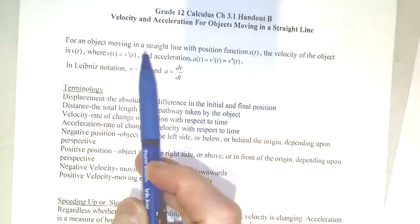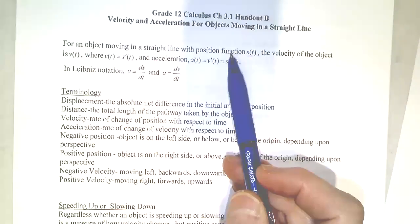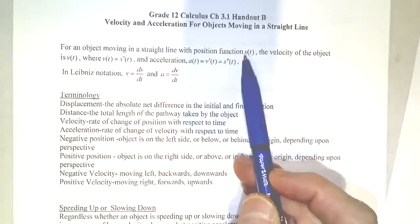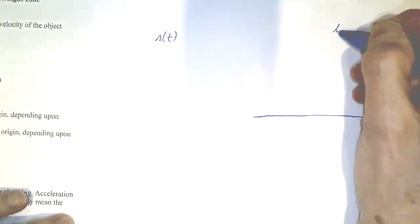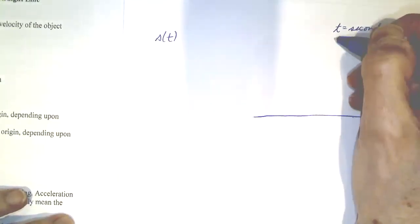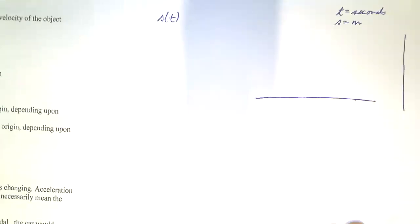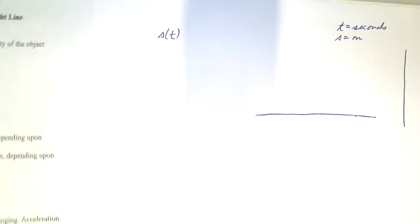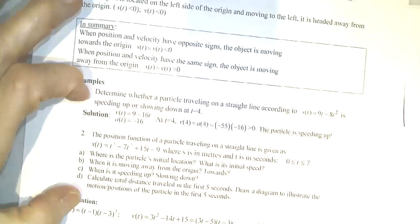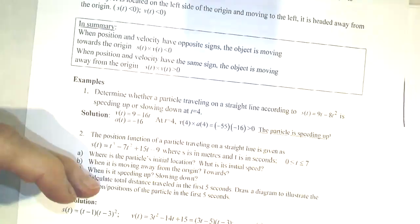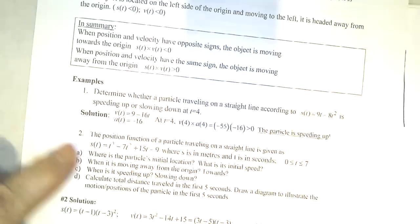We have different functions to describe this motion. The first function we're going to look at for an object moving in a straight line is called a position function, traditionally designated as S of T. S is going to be a function of time. We'll let T be seconds and S be measured in meters. The first specific function I'm going to look at is on the back of this handout. There are two examples, and I'm going to begin with the second function.